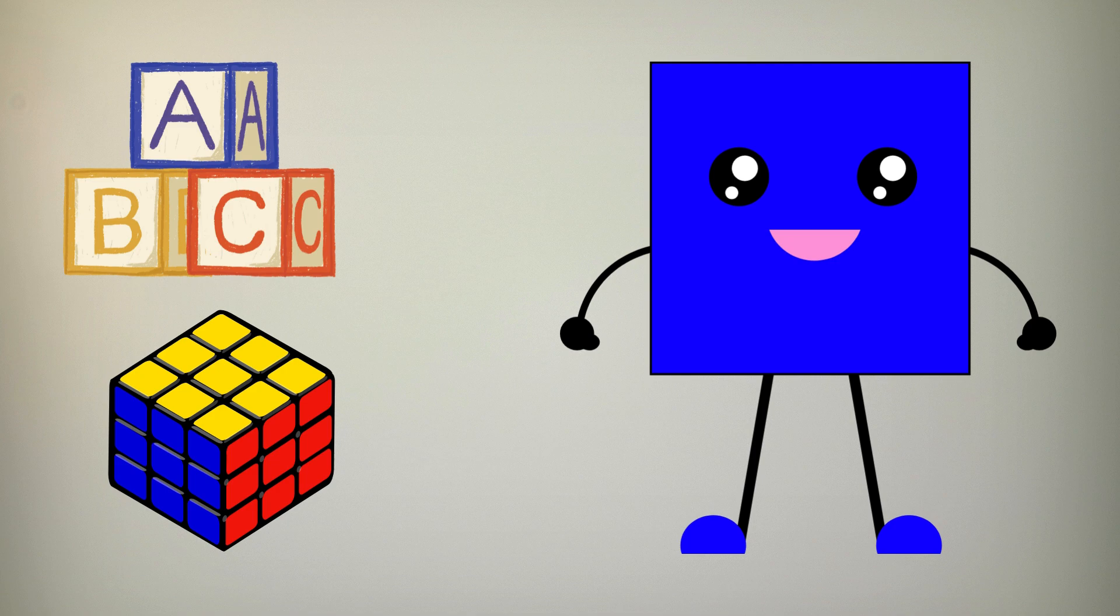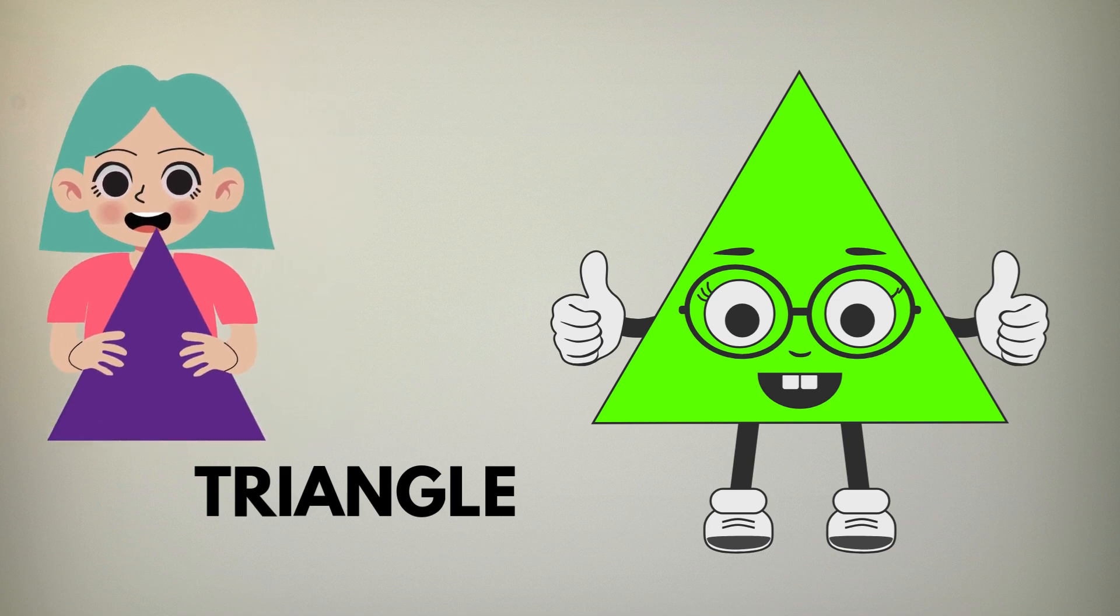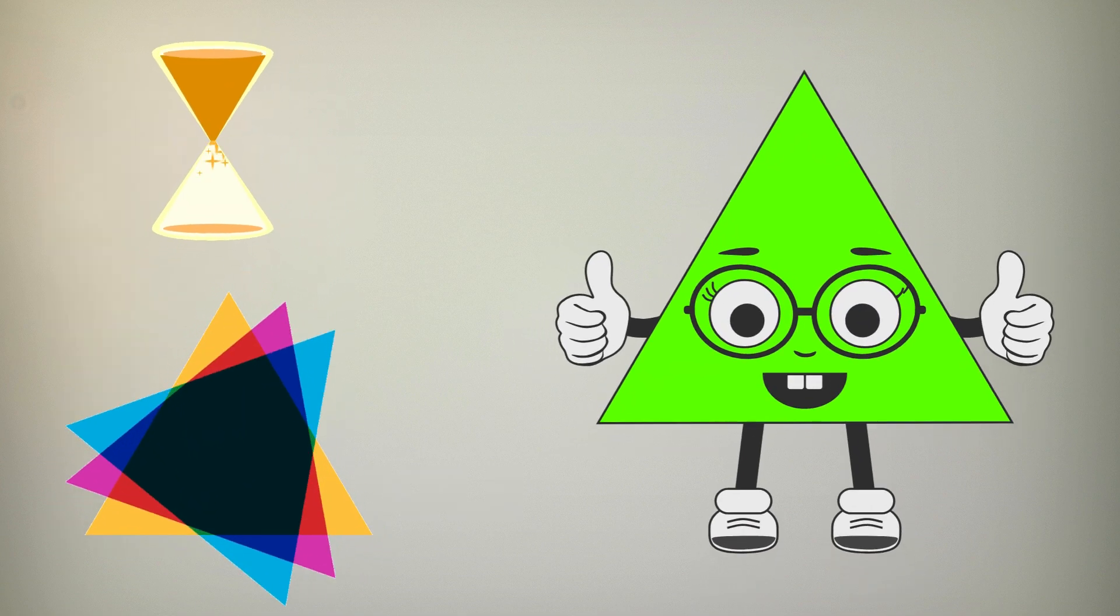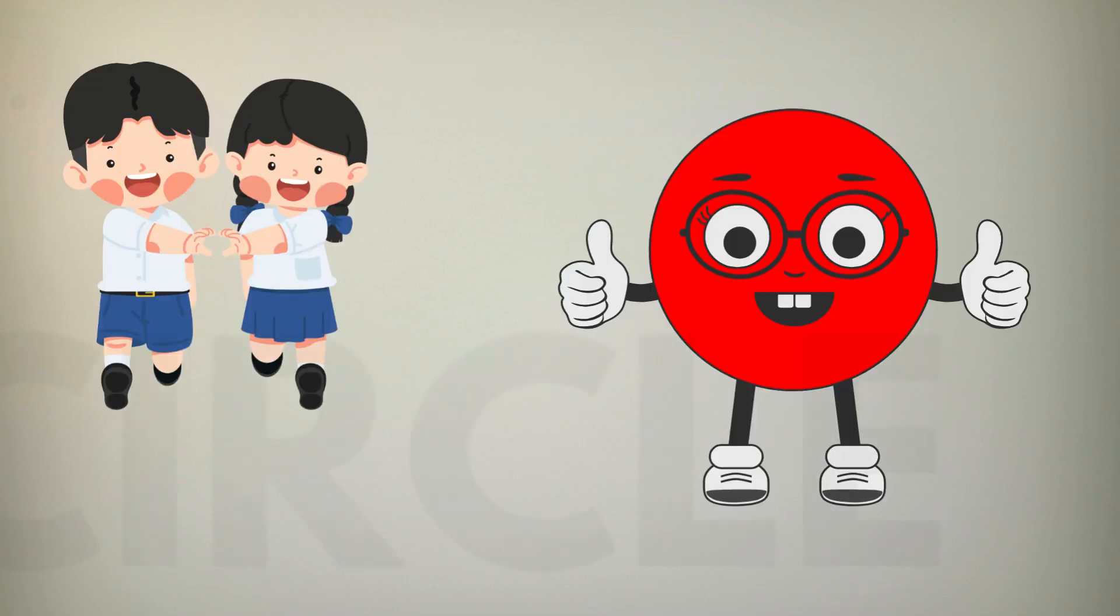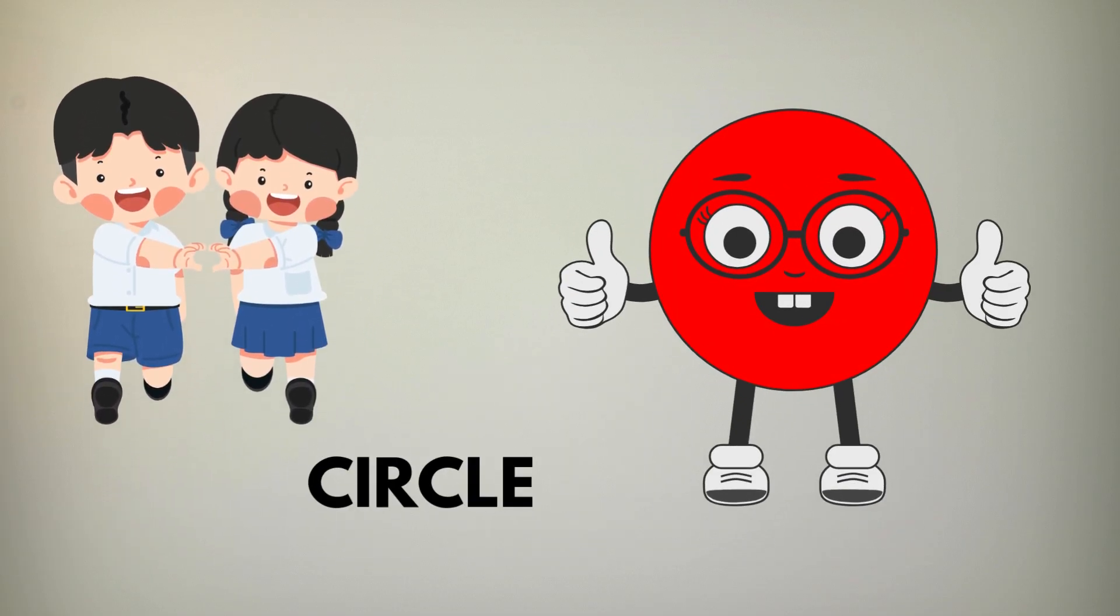Next is a triangle, pointy and neat, three little sides can't be beat. A circle rolls, it has no end, round and smooth, our spinning friend.